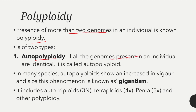When genomes are all distinct, this is called allopolyploid. In many species, the autopolyploid shows an increase in vigour and size; this phenomenon is known as gigantism — meaning when increased vigour and size occurs due to autopolyploid conditions, we call it gigantism.